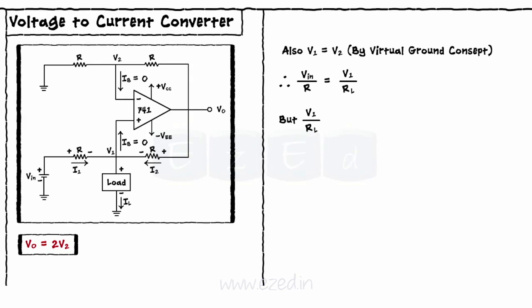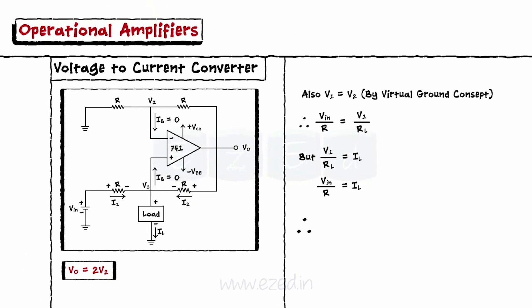But V1 upon RL equals IL, the load current. Thus, IL equals Vin upon R. As seen, the load current is represented in terms of an input voltage. This circuit is called as a voltage to current converter.